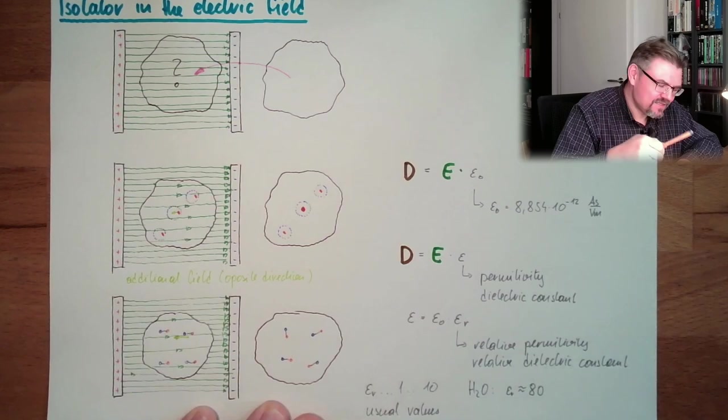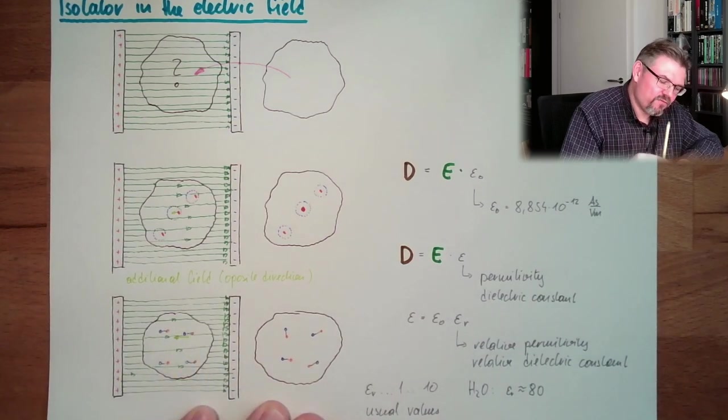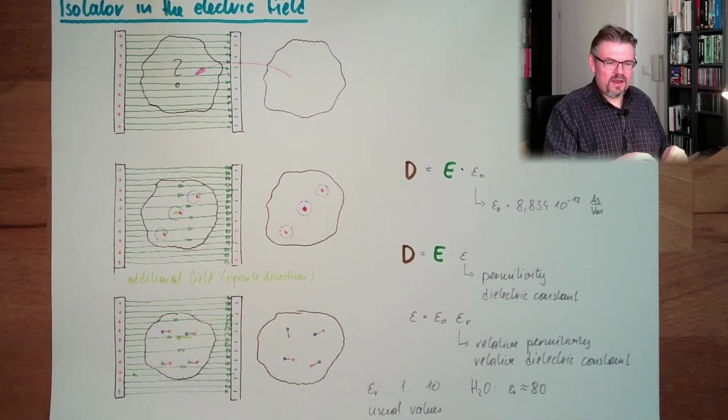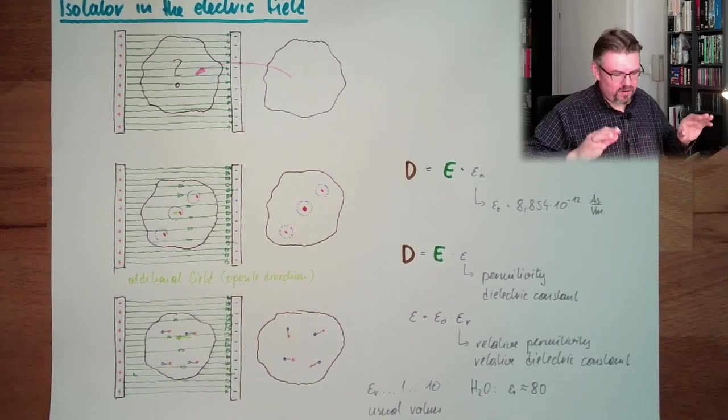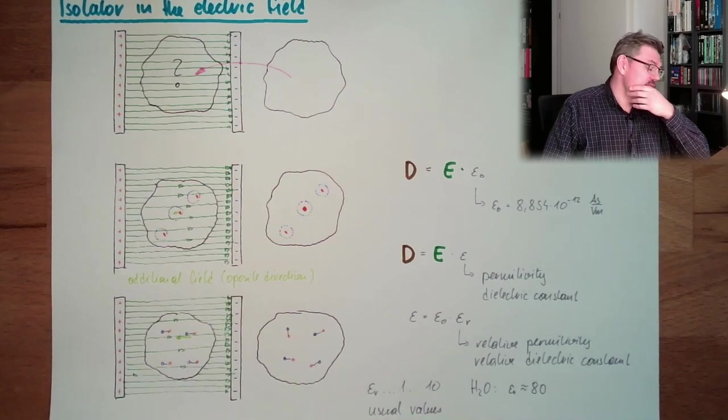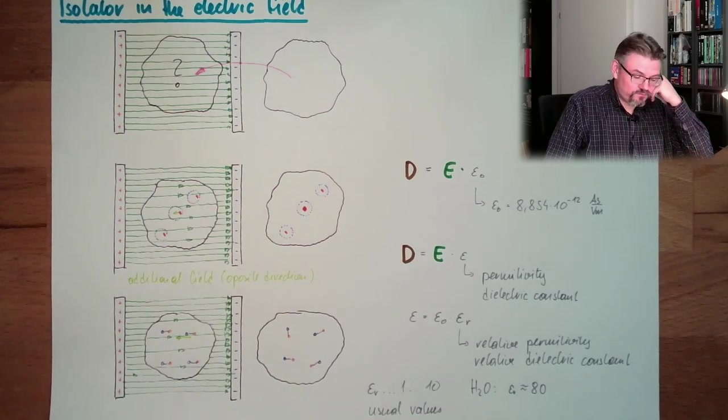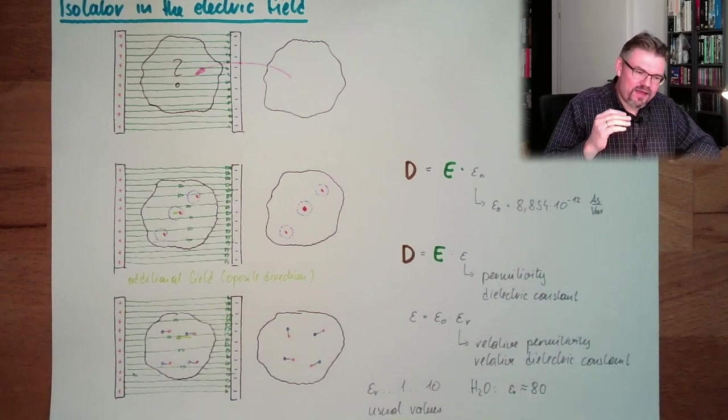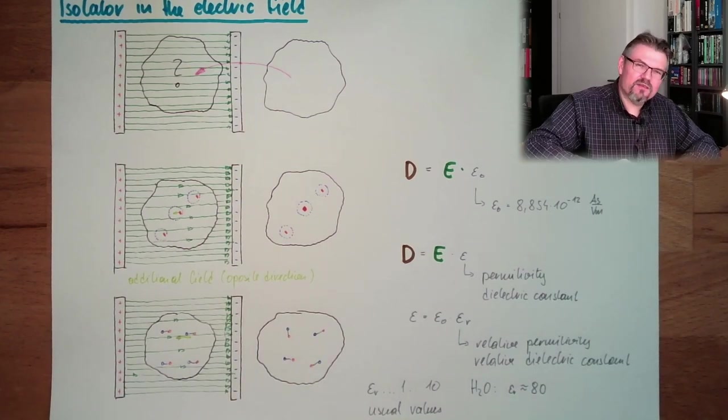Eighty times less electric field inside of water than in air, because air is around 1. Air is not really much different from vacuum. There are also high-tech ceramics. There are 10,000 and so on.